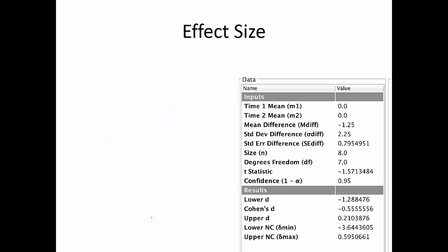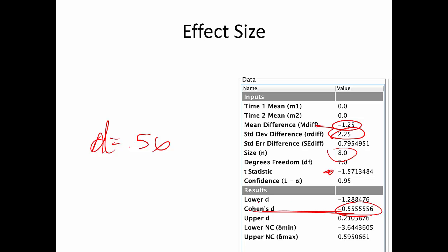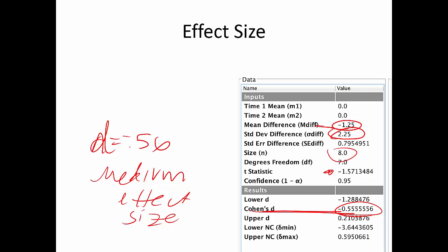Let's check the effect size to see if we just need more people. Enter mean difference, standard deviation of the differences, and N into MOTE. The T-value comes out to 1.57, matching our calculation. Cohen's d = 0.56 — a medium effect size. A medium effect size for reducing trash is practically meaningful, similar to aspirin and seatbelt studies that weren't statistically significant but were practically very important. The number of trash bags is likely going down, which is always good.